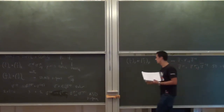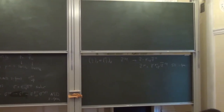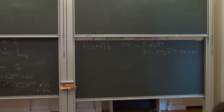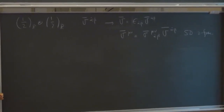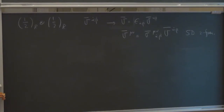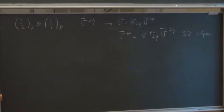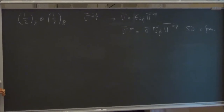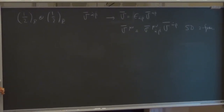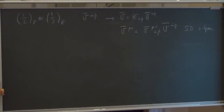Student: When we teach the Dirac spinor, we explain that in the Lorentz group representation you have chiral (½, 0) and (0, ½). The Dirac spinor is (½, 0) + (0, ½). The question is: where is the Maxwell field? In spin one there are two cases: (½, ½) which totals spin one and is the Maxwell field, and then there are also (1, 0) and (0, 1).